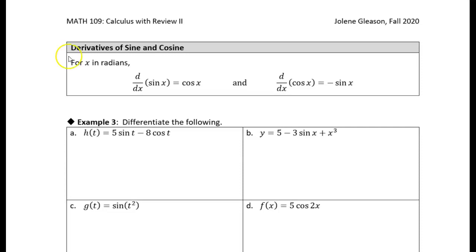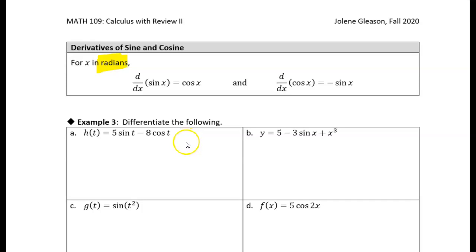One thing to note — it gets kind of lost sometimes — but this is for x in radians. We have to have the input to the sine and cosine functions be in radians. That's important to remember, although sometimes people forget: I have to be in radians for this to work.